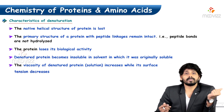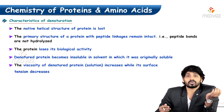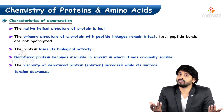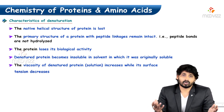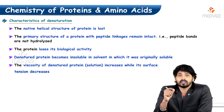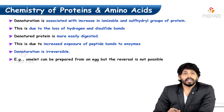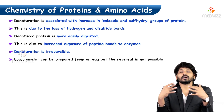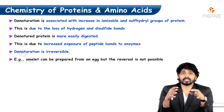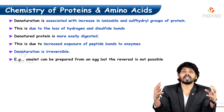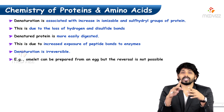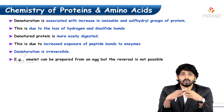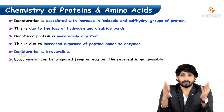Denatured protein becomes insoluble in solvents in which it was originally soluble. Once the structure is disturbed, they can no longer remain soluble. The viscosity of denatured protein increases while surface tension decreases. Denaturation is also associated with an increase in ionizable and sulfhydryl groups of protein, because in secondary, tertiary, and quaternary structures these groups are packed inside the folded molecule, but when these structures are disturbed they become exposed.